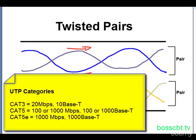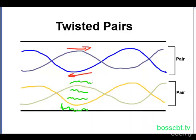Cat 3, category 3, is sufficient for 10 base T. Cat 5 is sufficient for 100 base T and 1000 base T. Cat 5E is actually a bit more enhanced for 1000 base T. You want to make sure you get the right kind of cabling depending on which Ethernet standard you're using.